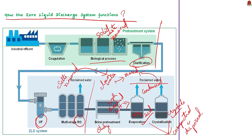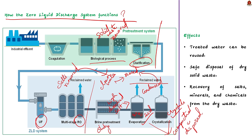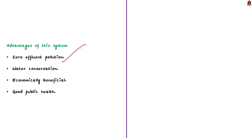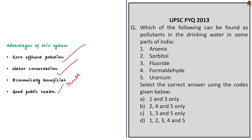The main advantages of the ZLD system include: firstly, zero effluent pollution, leading to environmental protection; secondly, water conservation due to the reuse of water; thirdly, ecological benefit in the long run due to reusing water and recovering resources; and fourthly, public health is ensured due to proper treatment of wastewater. Now let us move on to the next news article discussion.